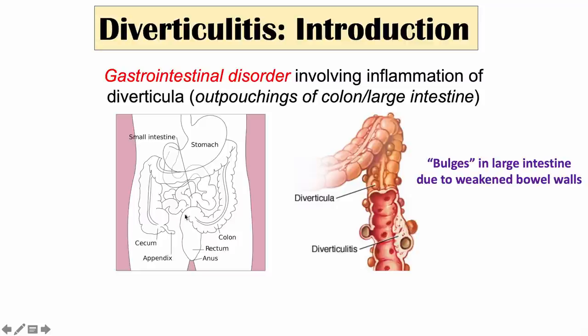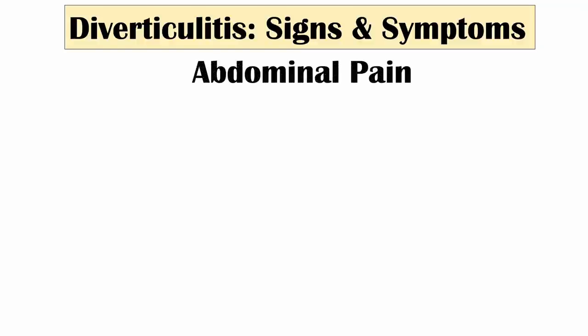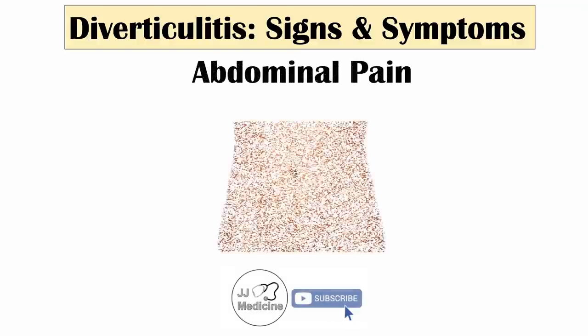This part of the large intestine, the sigmoid colon, is a common place where we can see diverticula, and that will become important when we talk about where symptoms of diverticulitis occur. So let's talk about signs and symptoms of diverticulitis. The first one is abdominal pain — this is the most important and most common symptom in diverticulitis.